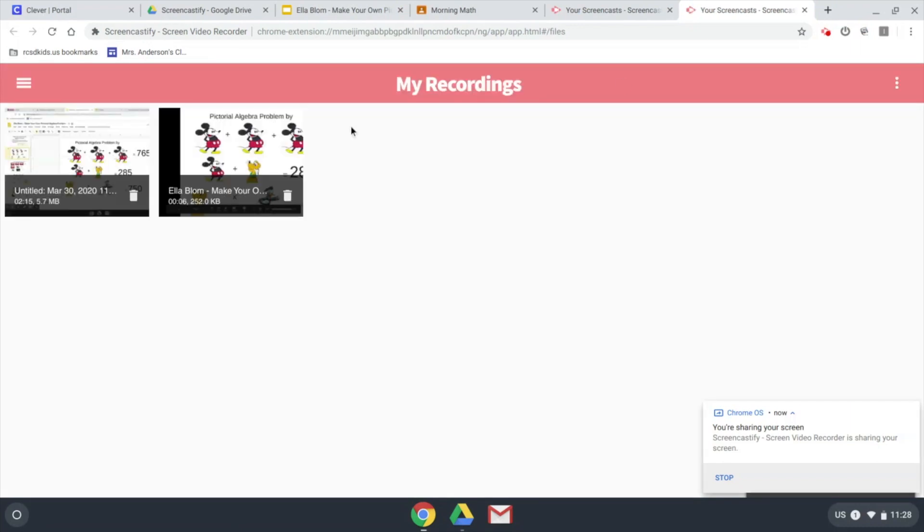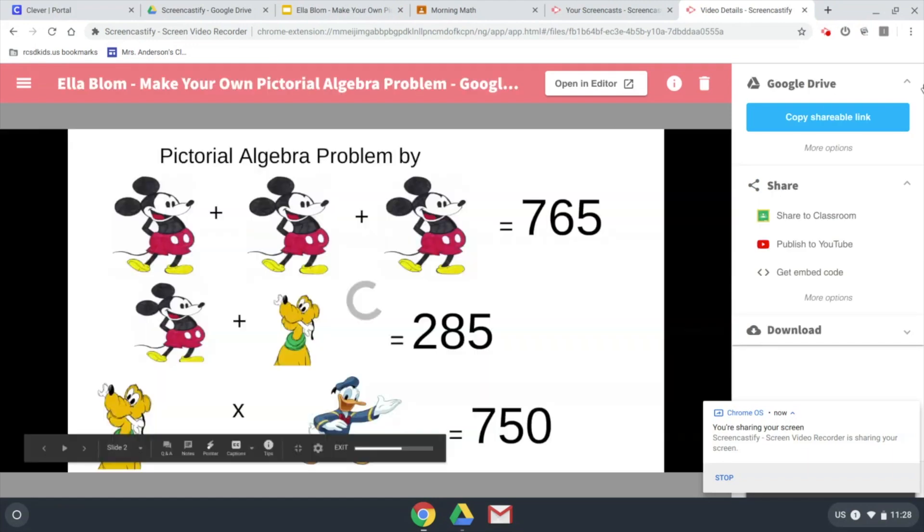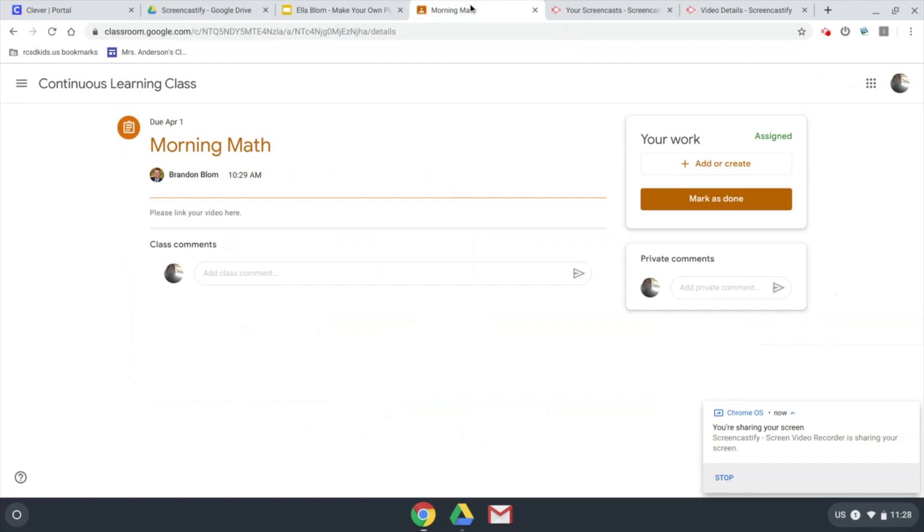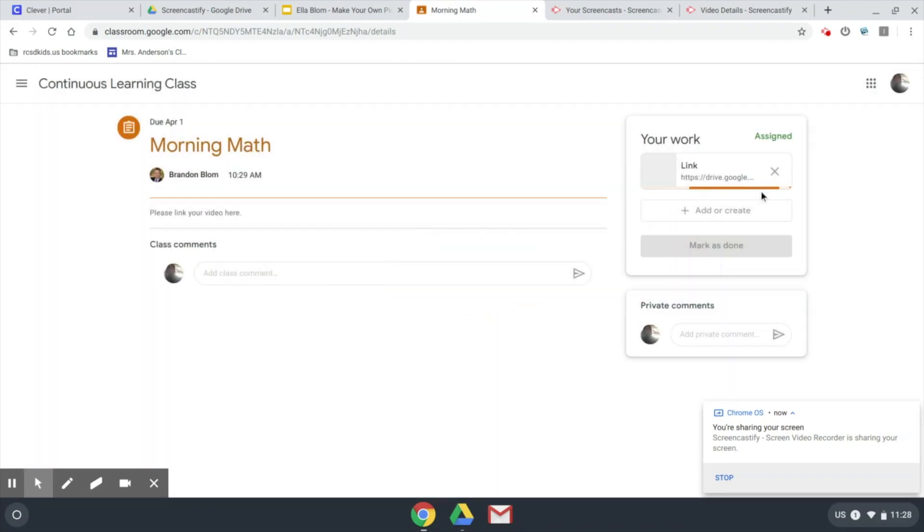When I go to My Recordings and I click on a video, right here it says Copy Shareable Link. So I can copy that link, go to my Google Classroom, and leave it as a comment. This is an assignment. If I wanted to paste as an assignment, I could hit the link, add the link that way. So basically I'm just copying the link and putting it either in comments or wherever I want to put it or on an assignment.